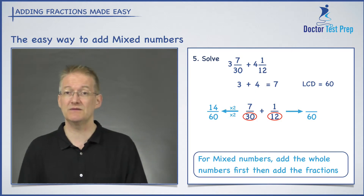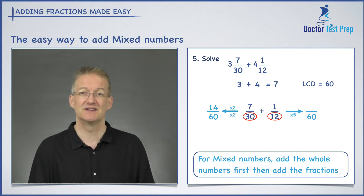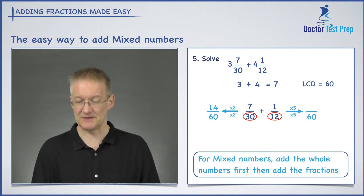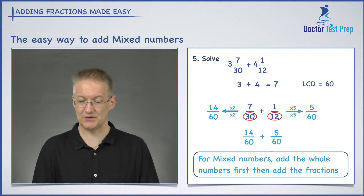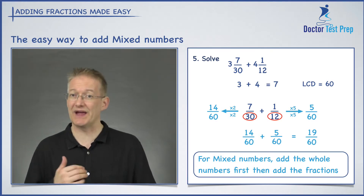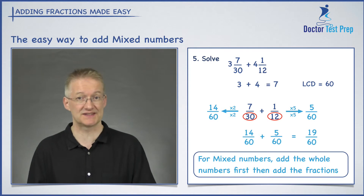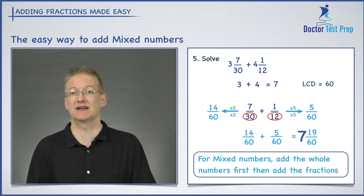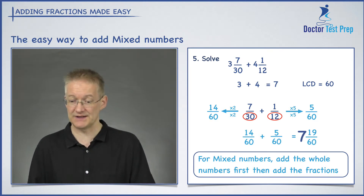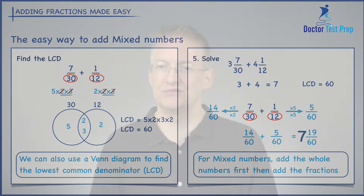Looking at 1 over 12: what did I do to the 12 to get to 60? I multiplied by 5. So I'm going to multiply the top by 5 as well, giving me 5 over 60. My new question becomes 14 over 60 plus 5 over 60, which becomes 19 over 60. When we added the fractions we got 19 over 60, and when we added the whole parts we got 7. So all we do to finish is put the 7 next to the 19 over 60. Our final answer is 7 and 19 sixtieths. Whenever adding mixed numbers: add the whole numbers first, then use the LCD to add the fractions, then place both answers next to each other.